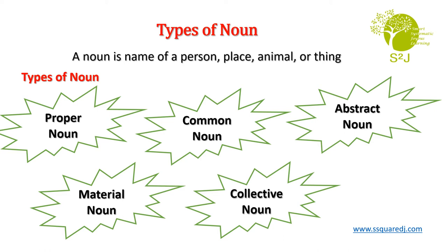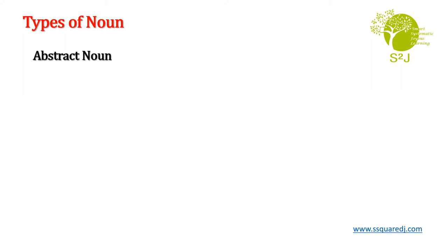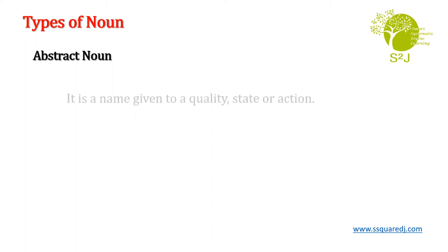So, let us begin with abstract noun. What is an abstract noun? Abstract noun is nothing but an idea — when it is a name given to a quality, state or action.